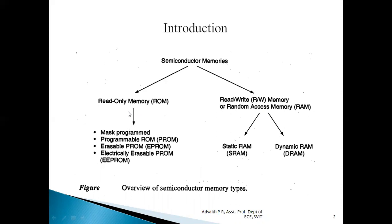Read-only memory is again subdivided into four major classifications: masked programmable read-only memory, programmable read-only memory, erasable programmable read-only memory, and electrically erasable programmable read-only memory. Random access memory is again subdivided into two variations: static RAM and dynamic RAM.